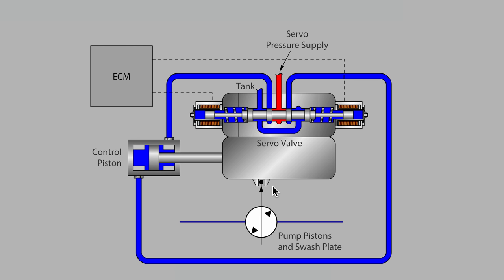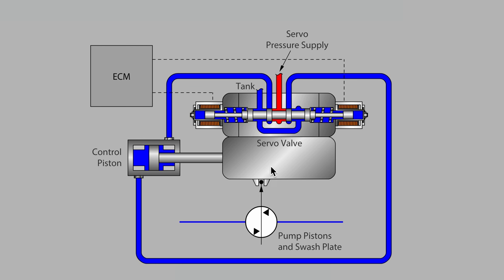Varying the flow in a piston pump involves changing the stroke length of the pistons. This is why the valve that varies the pump displacement is sometimes referred to as a stroker or a stroke controller. The direction and displacement of a closed-loop piston pump is handled by a servo mechanism.